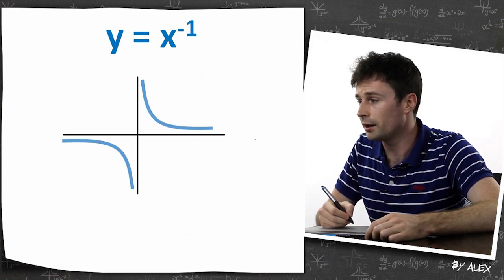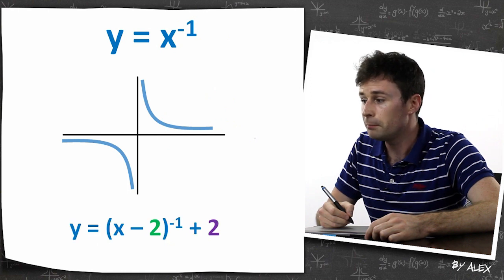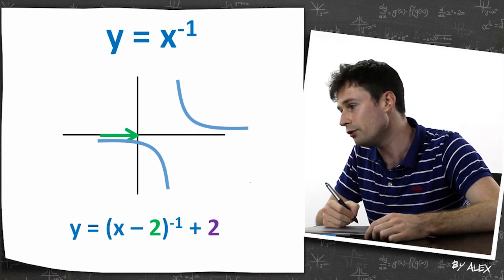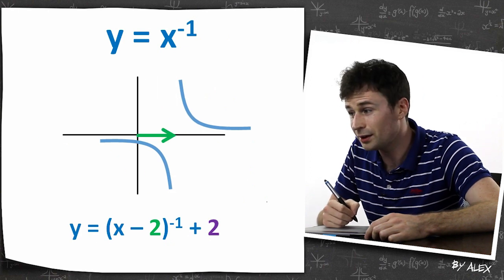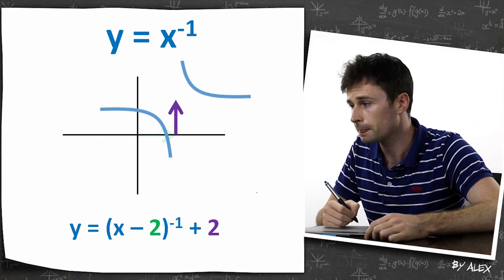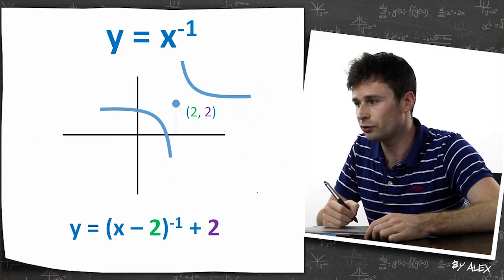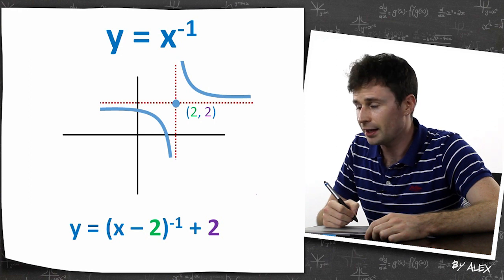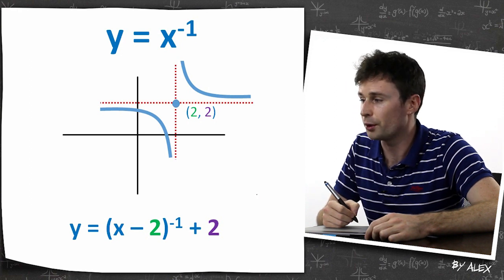Same deal with this one. This is y equals x to the negative one. But if you have it in this form, where you've got negative two on the x, it means you move it two over, and then plus two means you move it two up as well. And you just put in that little turning point form type thing where it originally started. And this thing has asymptotes as well, which we'll go into later.